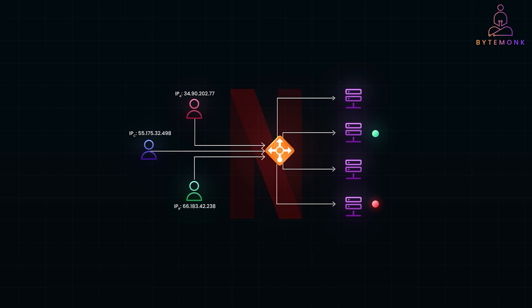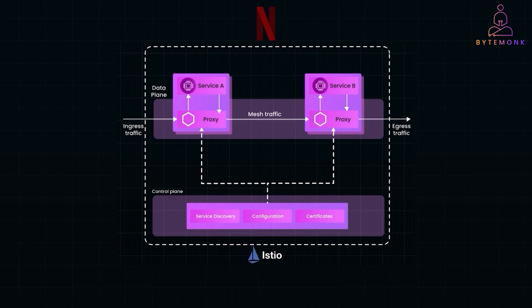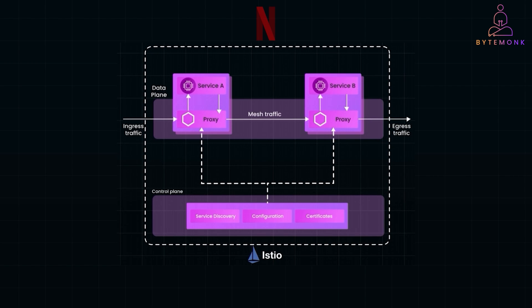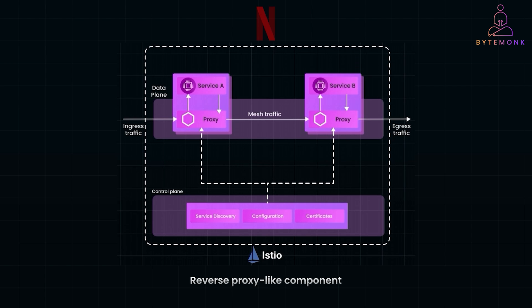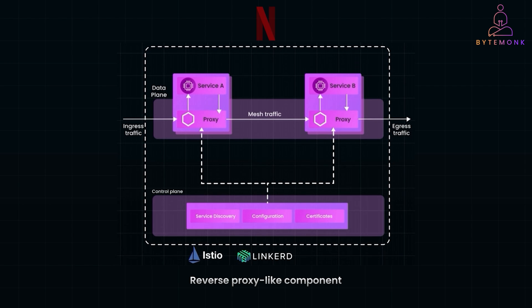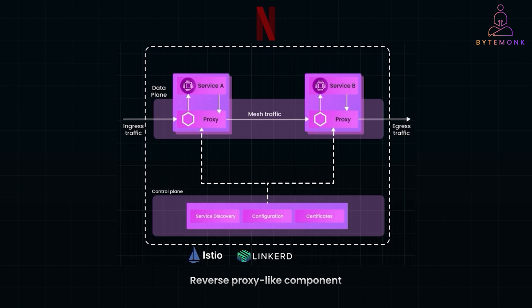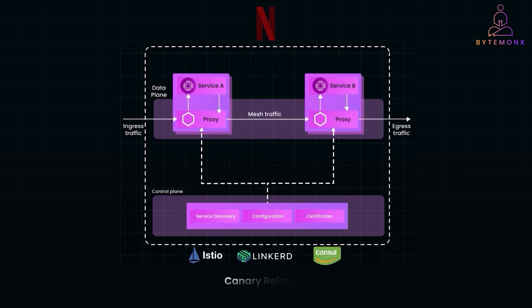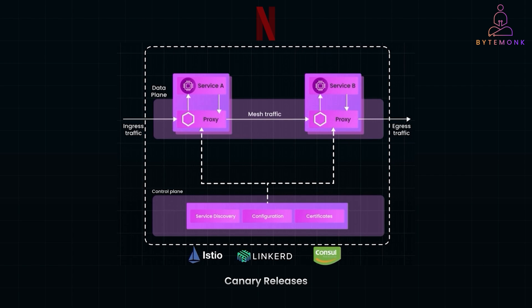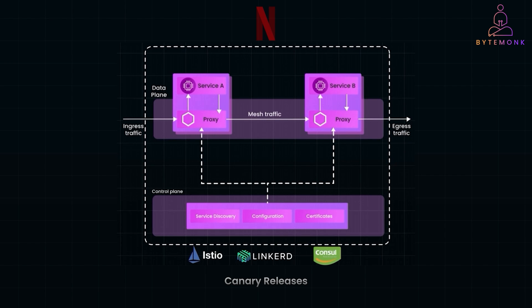Inside Netflix's architecture, many internal requests are routed through service discovery mechanisms and load balancers at the microservices level. The general principle of a reverse proxy-like component that abstracts service endpoints and handles routing is present throughout. By doing so, Netflix engineers can swap out backend services, perform canary releases, and roll out new features without changing the client's understanding of where those services live.